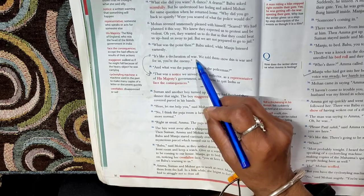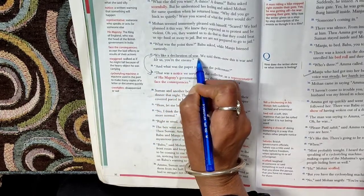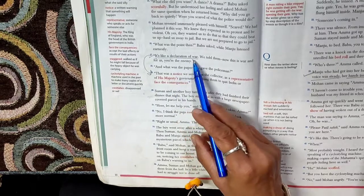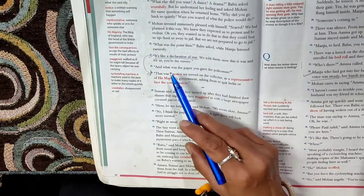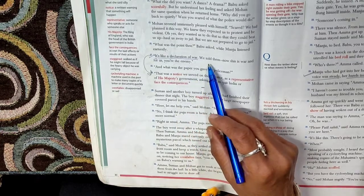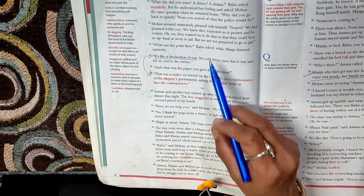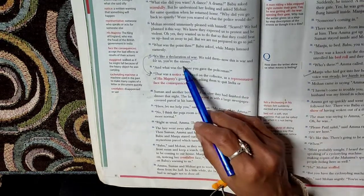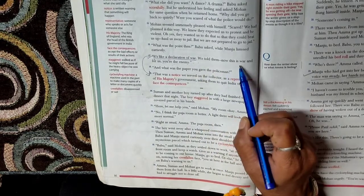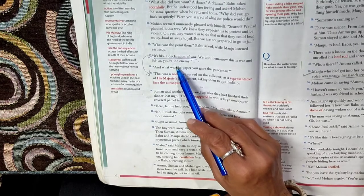It's like a declaration of war. This line is important, please underline. He says it's like a declaration of war. Mohan tells Babu that it's like a declaration of war. We told them, the college students told the police, told the DSP: now this is war, and for us you are the enemy. This is the beginning of a war.